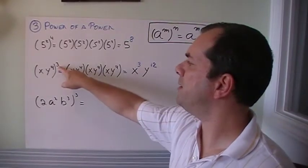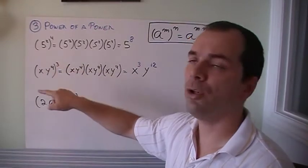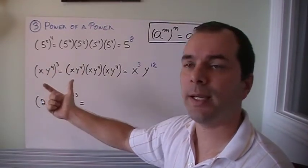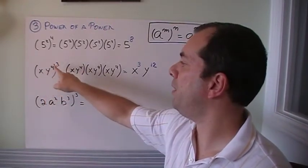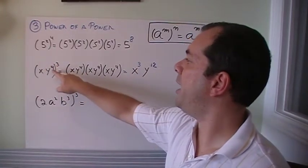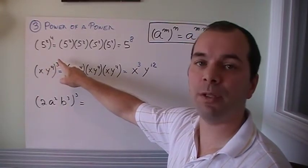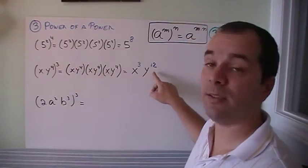If I have a power outside, that power goes onto everything inside that bracket. So x to the power of 3, that's 1 times 3 is 3, and y to the power of 4 to the power of 3, so 4 times 3 gives us 12.